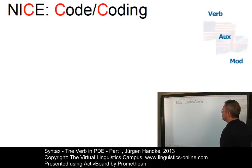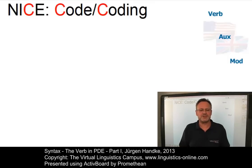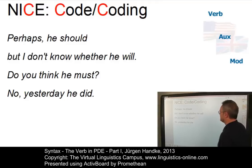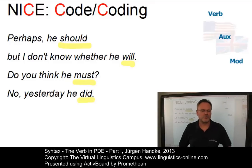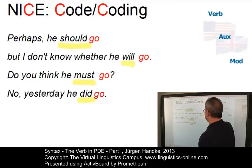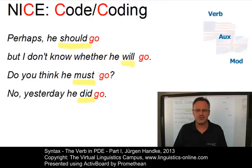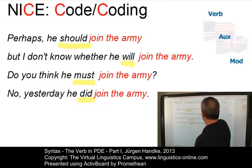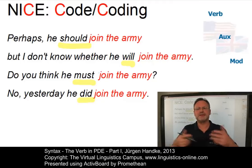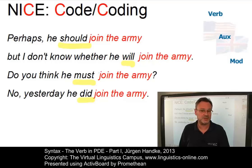The next context is referred to as code or coding — the C in NICE. This is a syntactic operation where a lexical verb is replaced, that is coded, by an auxiliary verb. For example, consider the passage: 'Perhaps you should. But I don't know whether he will. Do you think he must? No, yesterday he did.' These four auxiliary verbs could code a simple verb such as 'go': 'Perhaps you should go, but I don't know whether he will go. Do you think he must go? No, yesterday he did go.' Such a coding principle could also code more complex structures such as 'join the army'. Coding is a typical property of auxiliary verbs in present-day English but not of lexical verbs.